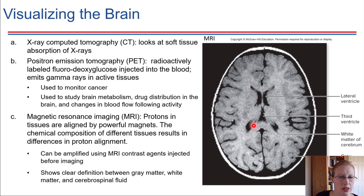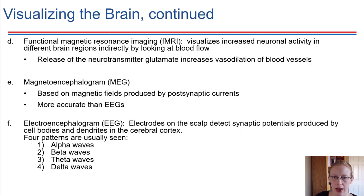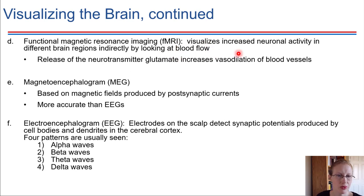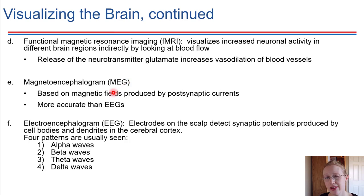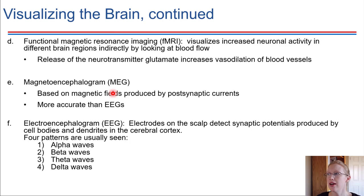A functional MRI allows us to see blood flow specifically — blood flow to the different regions of the brain. MEGs, or magnetoencephalograms, are also based on magnetic fields. Magnetic fields are produced any time charges move. Think back to what we learned about action potentials and postsynaptic currents — if we've got ions moving, then magnetic fields are generated around the brain, and that's something that can be detected with an MEG.